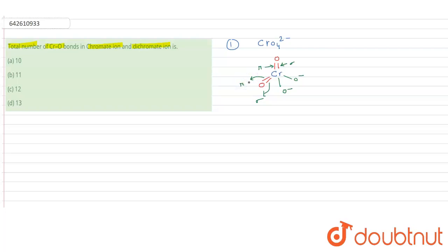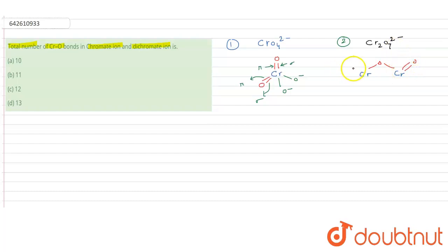Now for the structure of dichromate ion, Cr2O7²⁻ — there are two chromium atoms bonded to each other through a bridging oxygen. Each chromium also has two oxygen atoms bonded to it, plus additional O⁻ groups, and double-bond oxygen atoms. This gives the full dichromate structure with O⁻ terminals and double-bond oxygens on each chromium.